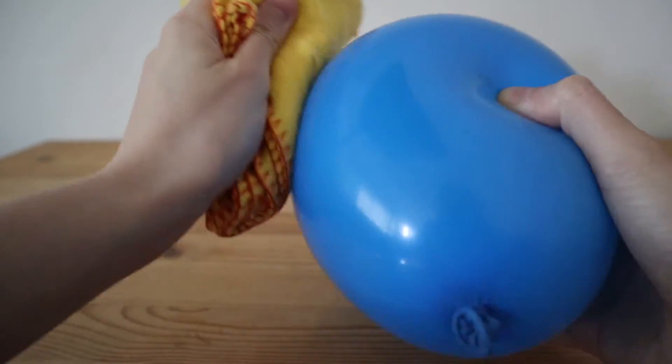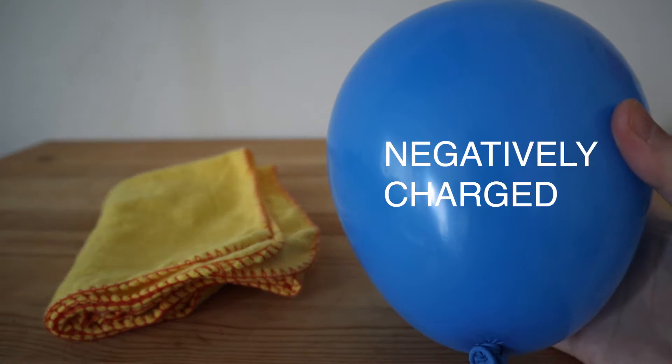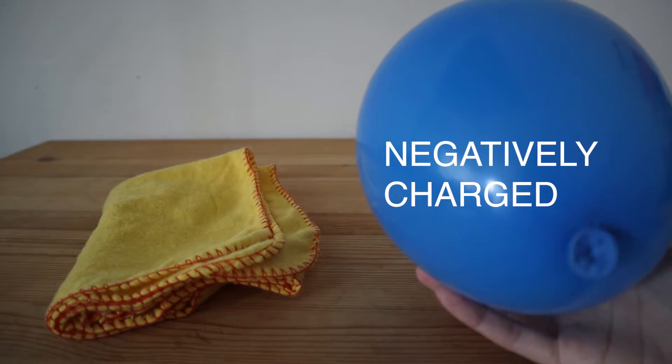The electrons that are originally on the cloth get rubbed onto the balloon, so now the balloon is negatively charged with excess electrons.